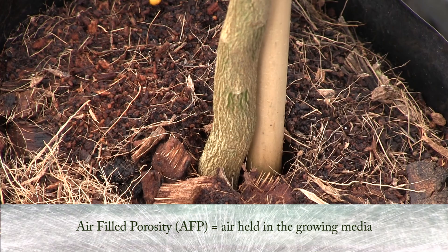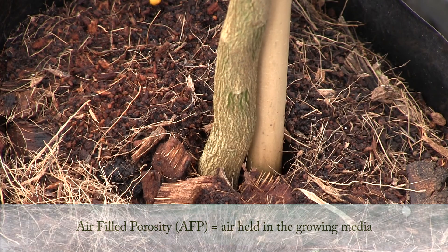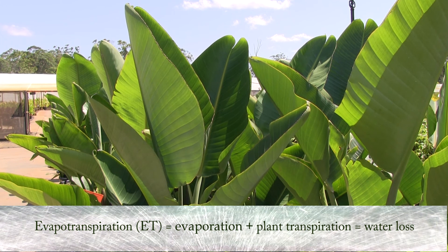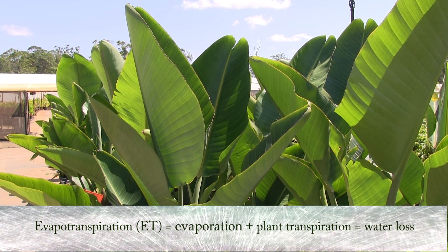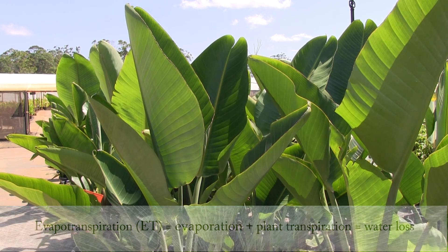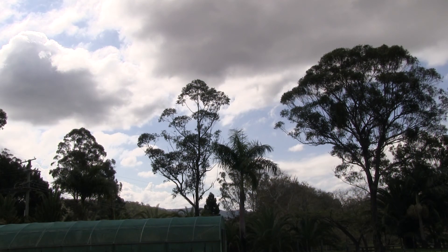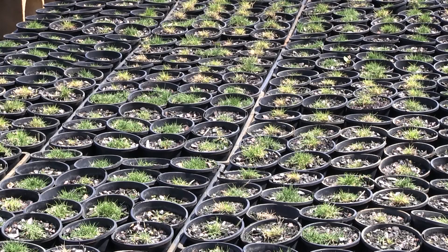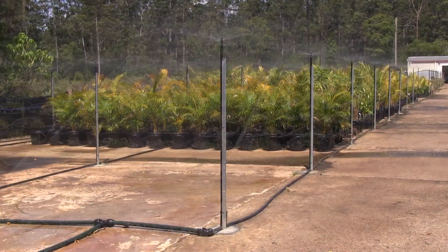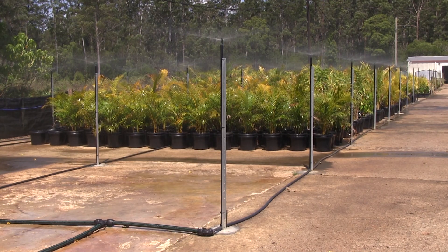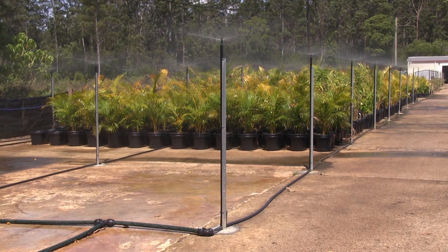The higher the air-filled porosity, the lower the water holding capacity. Plants draw water from the growing media and lose or transpire the majority of that water through the leaves in a process called evapotranspiration. The amount of evapotranspiration depends on the environmental conditions, plant type and stage of crop development, with the amount of water available governed by the growing media and irrigation scheduling practices.